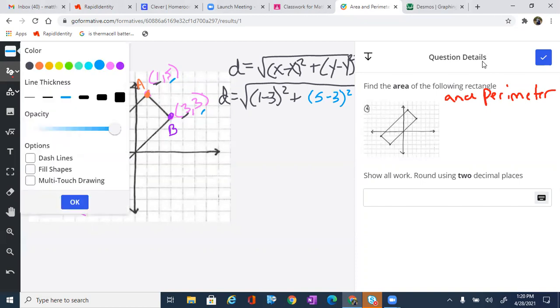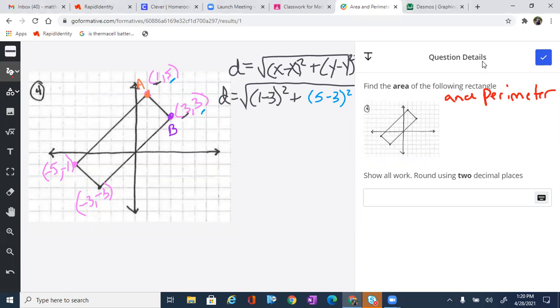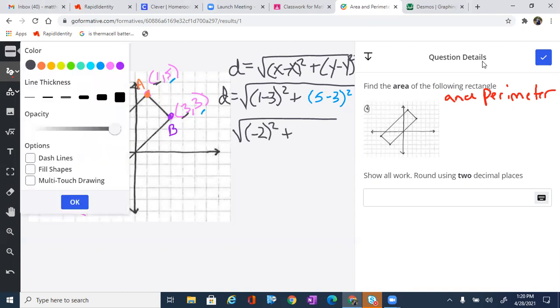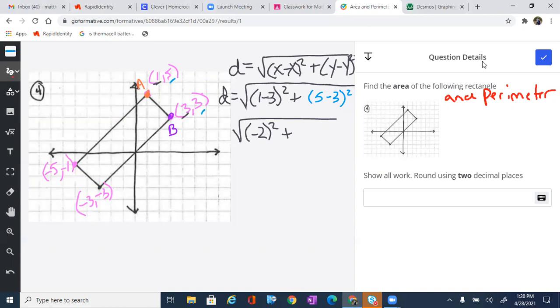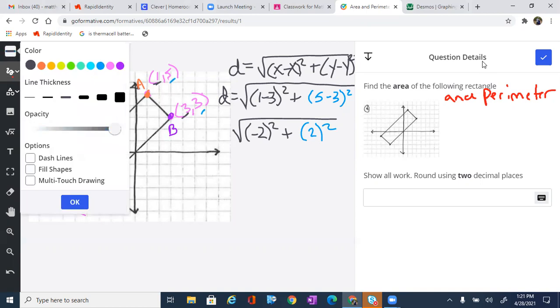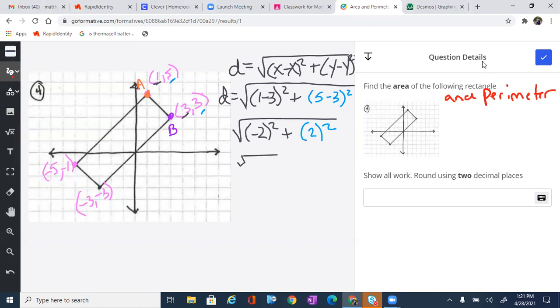From here, it is literally just going ahead and breaking everything down. So the square root of 1 minus 3 is negative 2 squared, 5 minus 3 is 2 squared. And then we just keep working our way down. We get the square root of negative 2 squared is 4 plus 2 squared is 4, or we get the square root of 8.